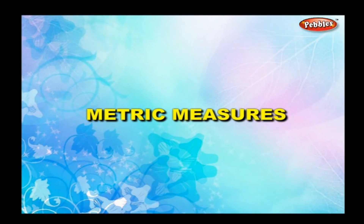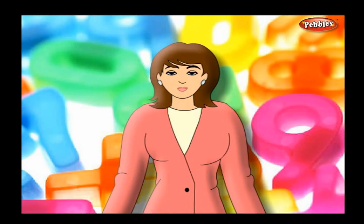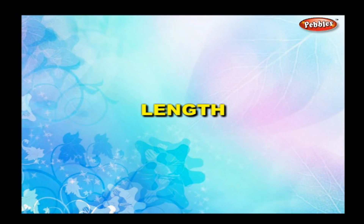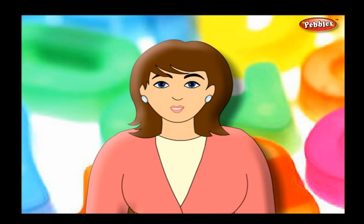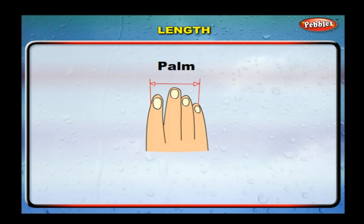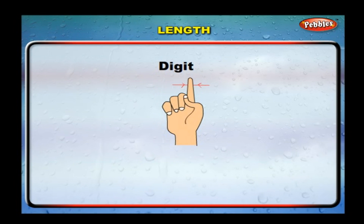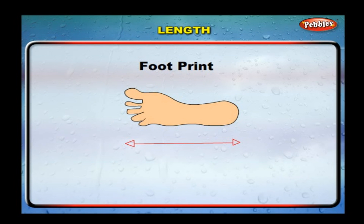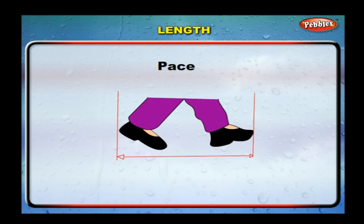Metric measures, as we have already studied in our previous class, are used for finding length, weight, volume, and capacity. Let us study the same in detail. Length: the length of a thing can be found by using a hand span, a palm, a cubit, a digit, a footprint, a pace, or a full span.